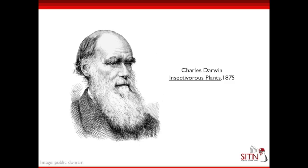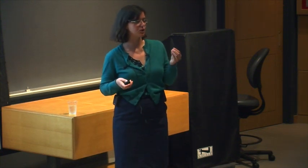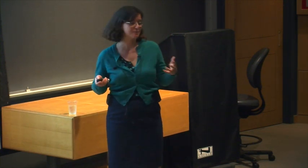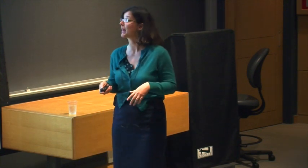Darwin wrote the book Insectivorous Plants in 1875. In it he documented many experiments he did with sundews and Venus flytraps. He really did the experiments to break it down and show that these plants were producing digestive enzymes and could digest and absorb nutrients from prey. At this point it was pretty well recognized that yes, this is actually something that's happening.